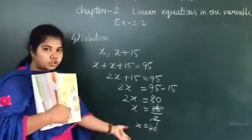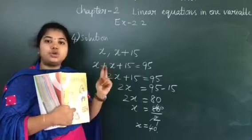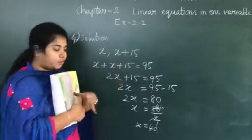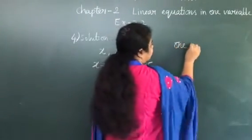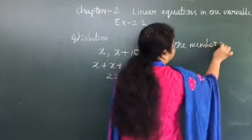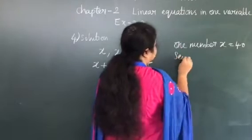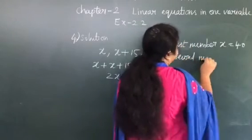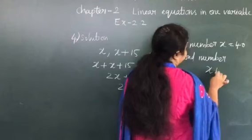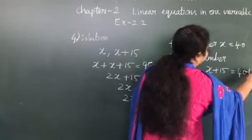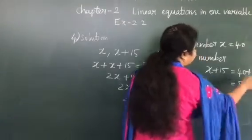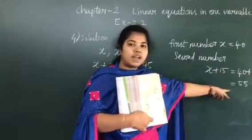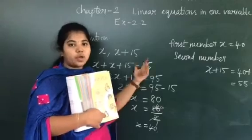The sum does not stop here — they are asking you to find both numbers. We took the two numbers as x and x plus 15. So the first number x equals 40, and the second number x plus 15 equals 40 plus 15, which equals 55. So the two numbers are 40 and 55. Check: 40 plus 55 equals 95, which matches the given sum.